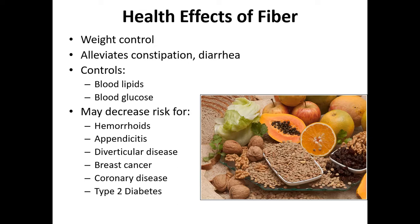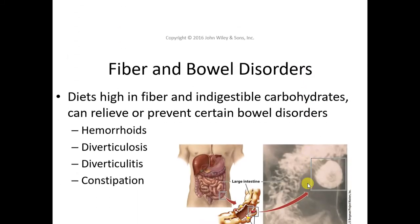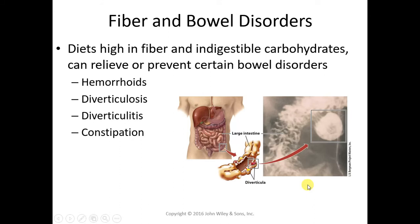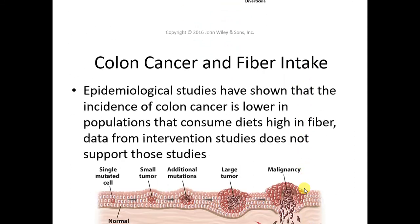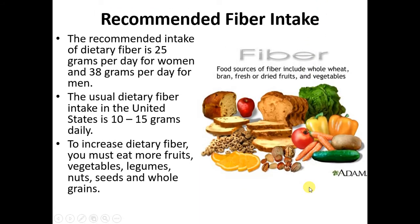Soluble fiber reduces cholesterol absorption — be sure to understand the mechanism for how this occurs. It can keep your bowel healthy, lessening constipation, diverticulosis, and hemorrhoids. Epidemiological studies show that when we eat more fiber, we have a lower risk for colon cancer. The recommendation is 25 grams for women and 38 grams for men — you should absolutely know these recommendations for the test. We're eating about half of that, and some people are much, much lower.